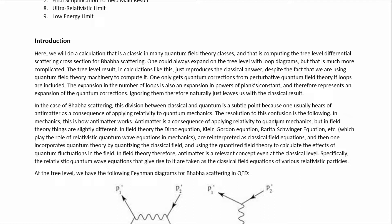In the case of BABA scattering, this division between classical and quantum is a subtle point because one usually hears of antimatter as a consequence of applying relativity to quantum mechanics. In field theory, things are slightly different. The Dirac equation, Klein-Gordon equation, Rarita-Schwinger equation, etc., which play the role of relativistic quantum wave equations in mechanics, are reinterpreted as classical field equations. One then incorporates quantum theory by quantizing the classical field and using the quantized field theory to calculate the effects of quantum fluctuations in the field.